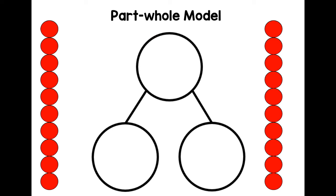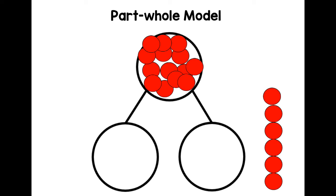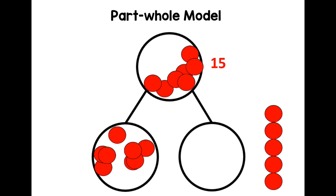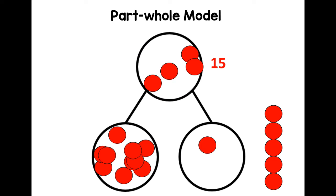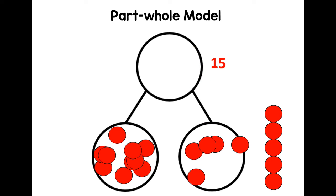Let's use our part-part-whole model, and remember the whole is our number of the day — so we're going to need 15. If you do this at home, you can move the counters into the parts — you can have whatever parts you like, as long as you move all 15 counters out of the whole circle. We always do 10 as our first part on number of the day — so if we've got 10 as one part, the other part must be five.